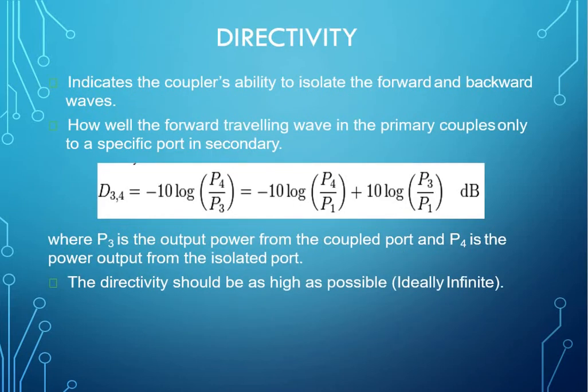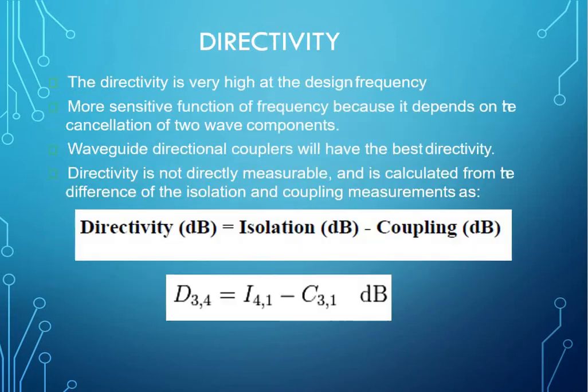Now comes directivity. Directivity of a directional coupler is defined as the ratio of forward power to backward power. The coupling factor is a measure of how much the incident power is being sampled, while directivity is a measure of how well the directional coupler distinguishes between the forward and reverse traveling waves. Directivity should be as high as possible. Directivity equals isolation minus coupling. Directivity is very high at design frequency and a more sensitive function of frequency because it depends on the cancellation of two wave components.